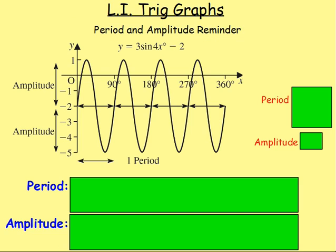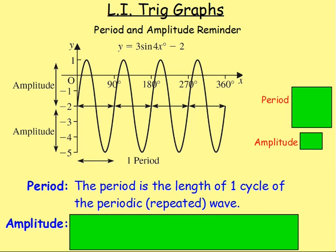Let's put that on the next page then. So this is the graph that we just had: three sine four x minus two. The two words that you need to be aware of then are the period and the amplitude. So the period, it is the length of one cycle of the periodic, which means repeated wave. So you can see that this wave here, it's just repeated and you know the sine graph, the cos graph, tan graphs repeated every 360 or 180 degrees.